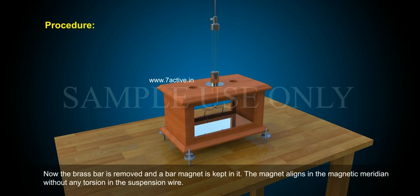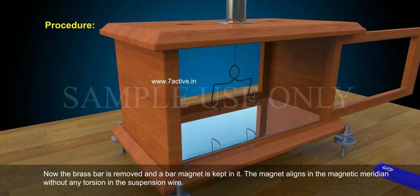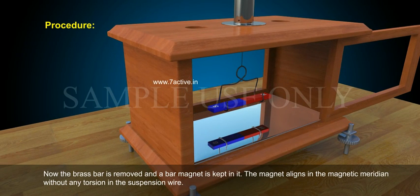Now, the brass bar is removed and a bar magnet is kept in it. The magnet aligns in the magnetic meridian without any torsion in the suspension wire.